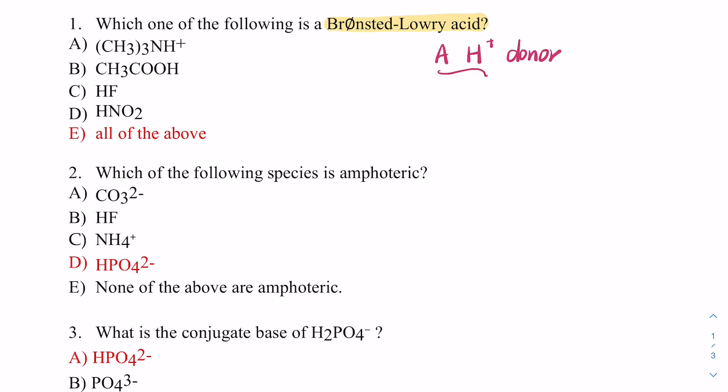So a Brønsted-Lowry acid is any material that has an H in its chemical formula. But you also have to see if that H could be donated — that's what we mean by 'potentially' a Brønsted-Lowry acid.